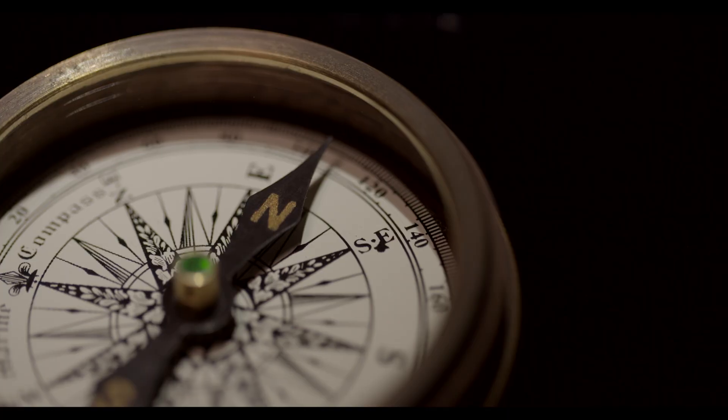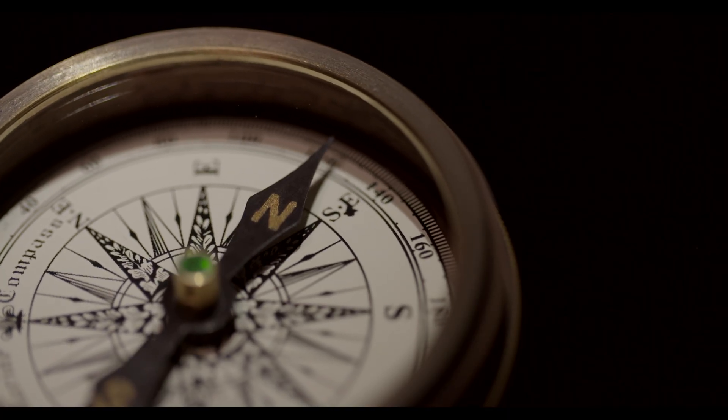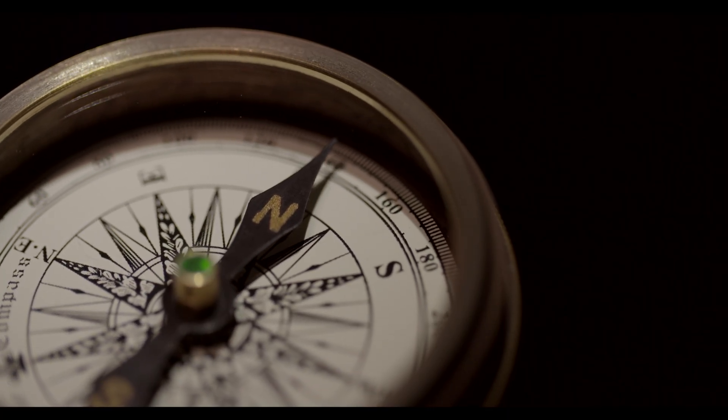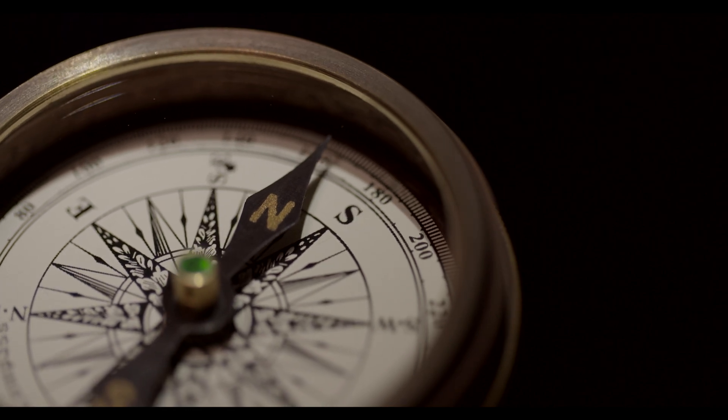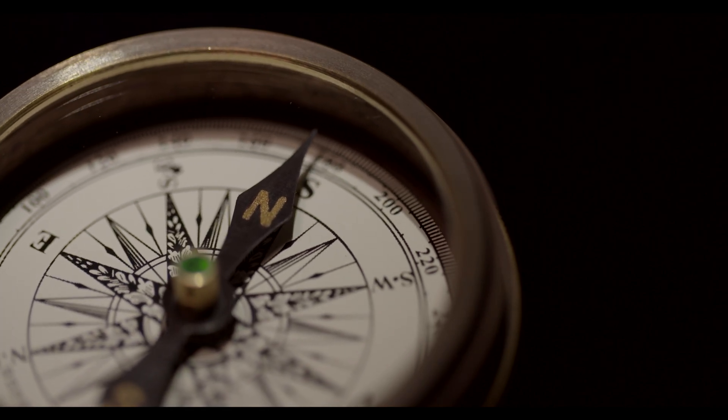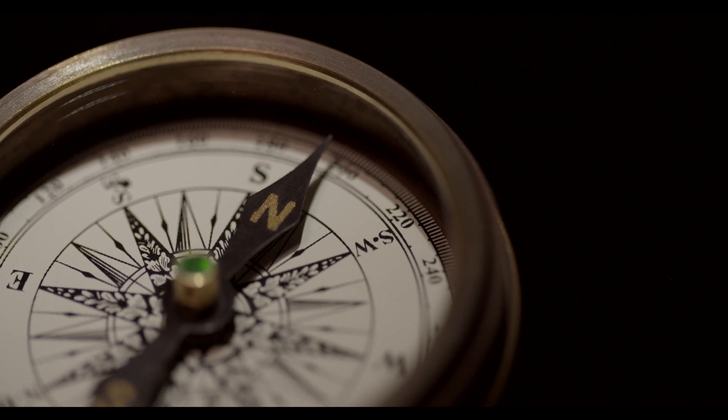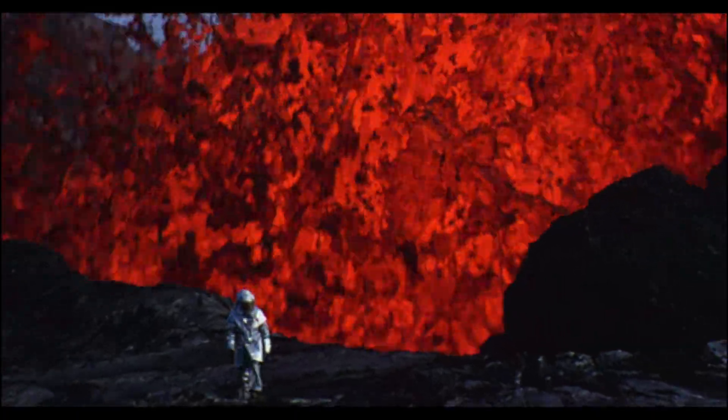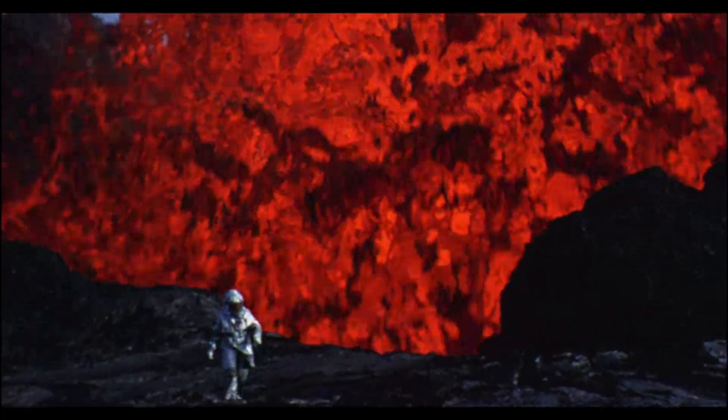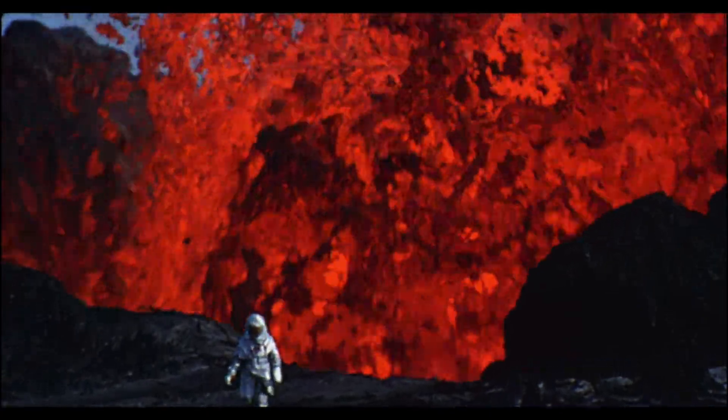At this point, you may be wondering how we know anything about the Earth's interior given that no one's ever actually seen it. As it turns out, the evidence needed to learn about the Earth's interior is easier to gather than you might think. Have you ever used a compass? If so, you know that a compass's needle always points towards the north and is evidence of Earth's magnetic field, and by extension the molten nature of Earth's iron-rich outer core.